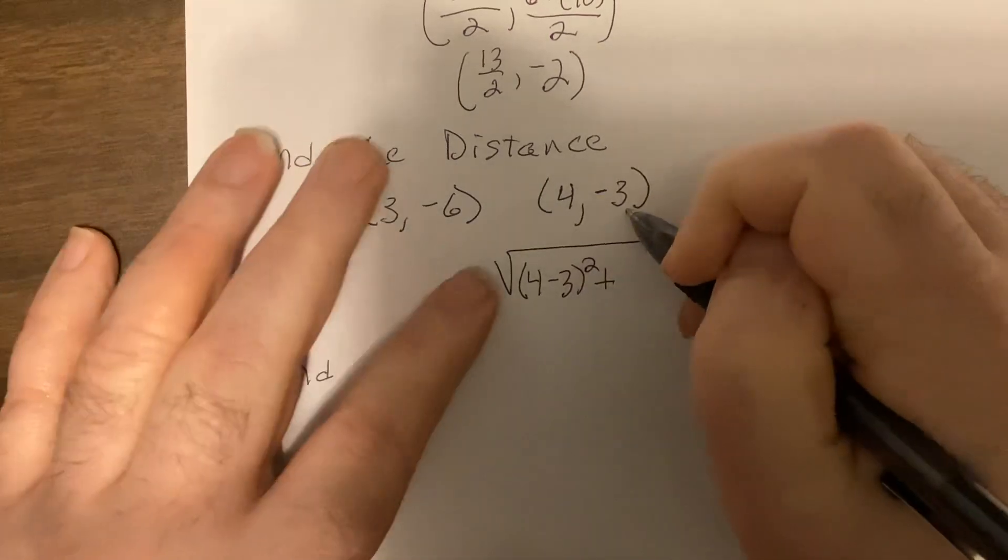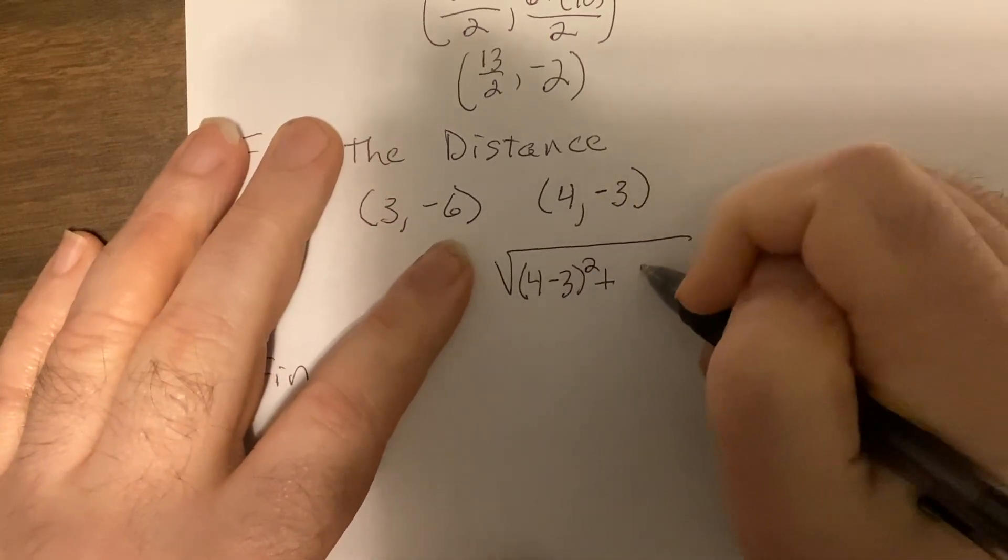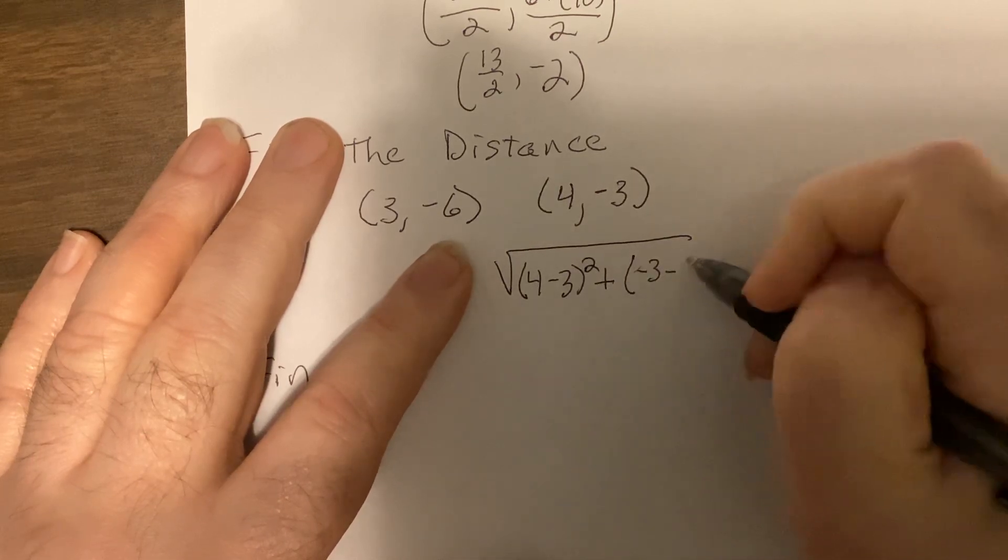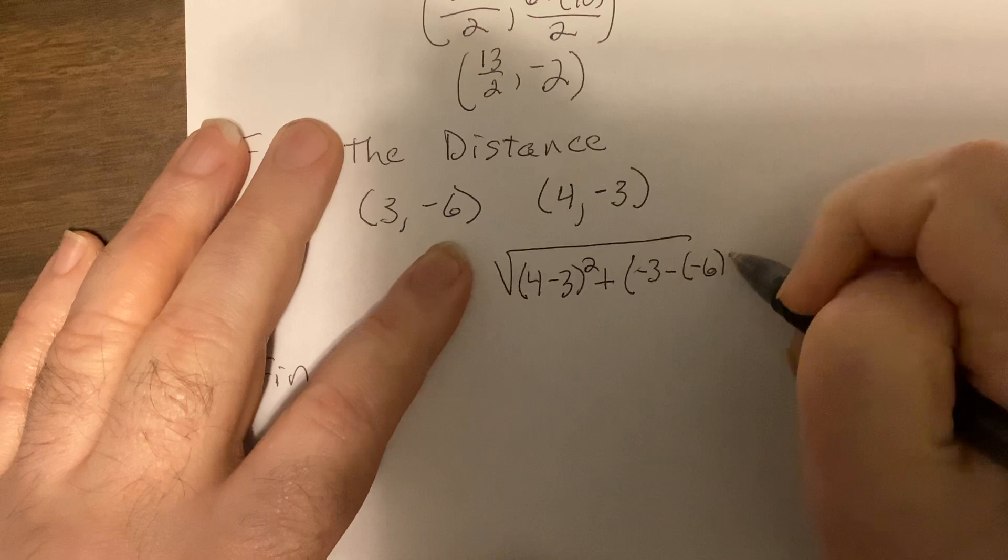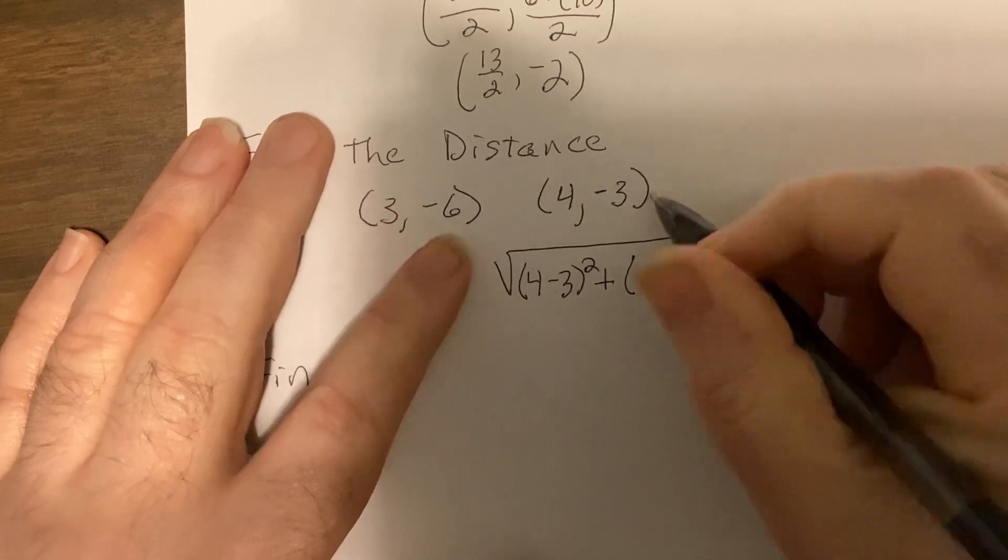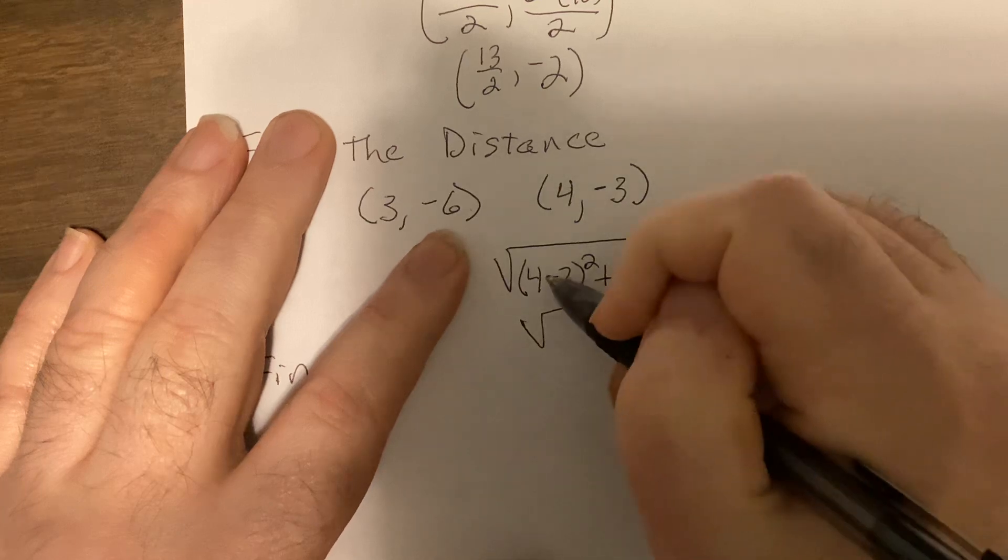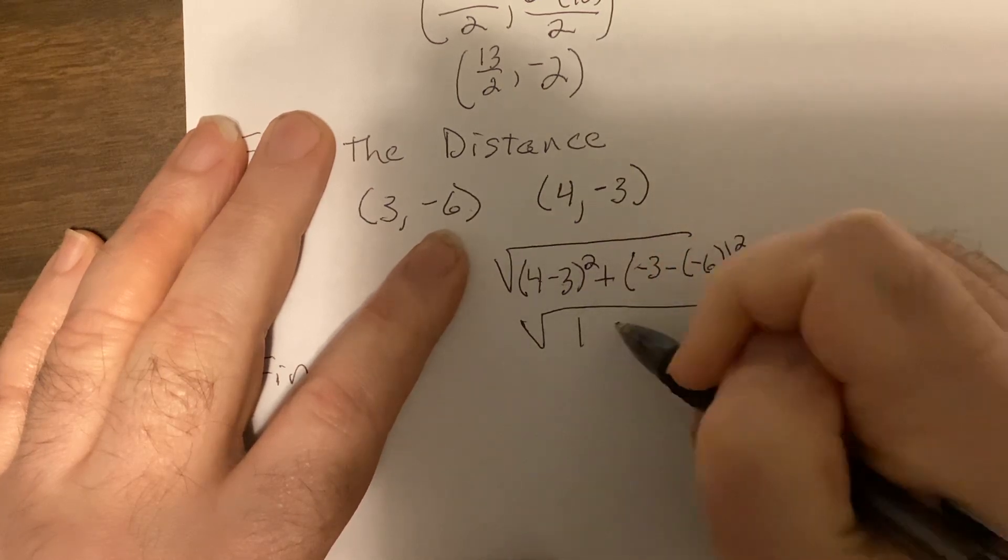plus the difference of the y's. So it'd be negative three minus a negative six, or you could even go negative six minus negative three, whatever makes you happy. Four minus three is one, one squared is one.